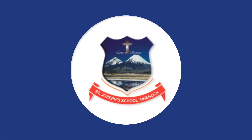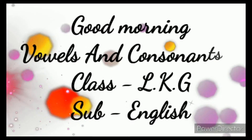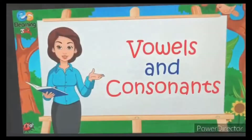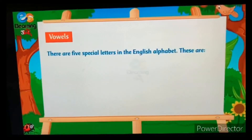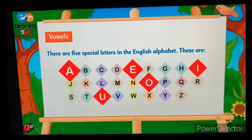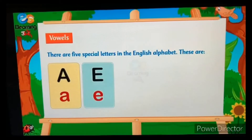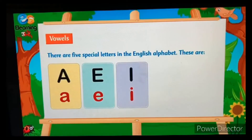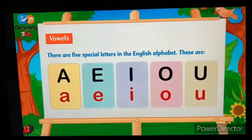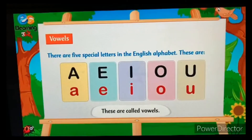Good morning, my dear students. Today we will learn vowels and consonants. Vowels: there are five special letters in the English alphabet. These are A, E, I, O, U. These are called vowels.